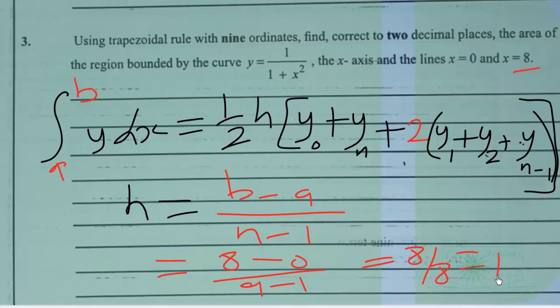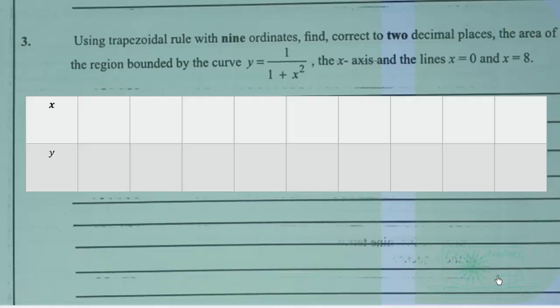So now we can construct a table of values starting at x equals 0, because the function we are dealing with is integral of x equals 0 to x equals 8 of y, where y is 1 over 1 plus x squared dx.